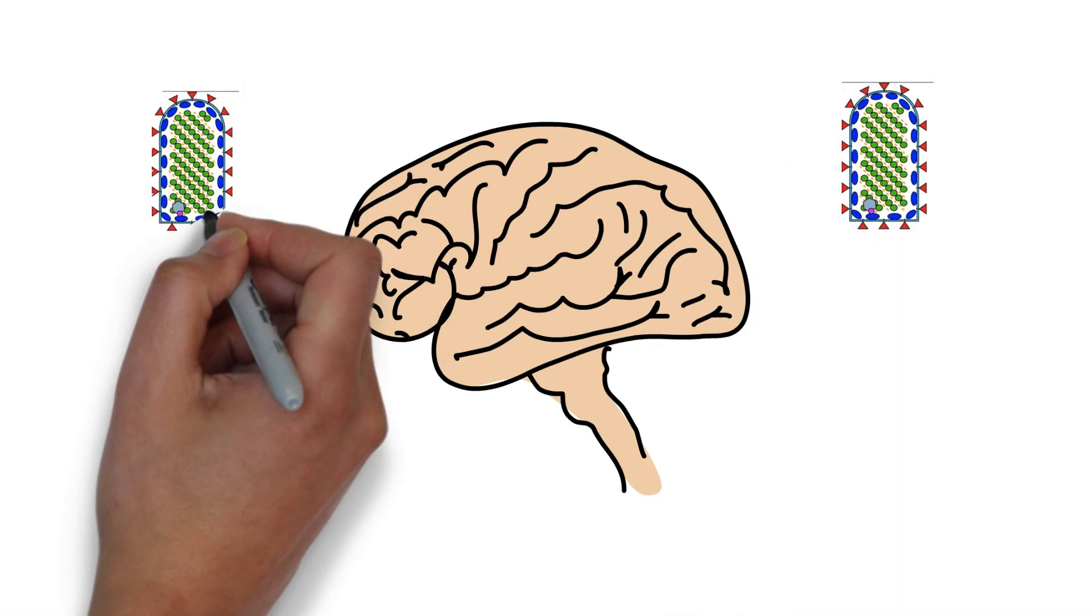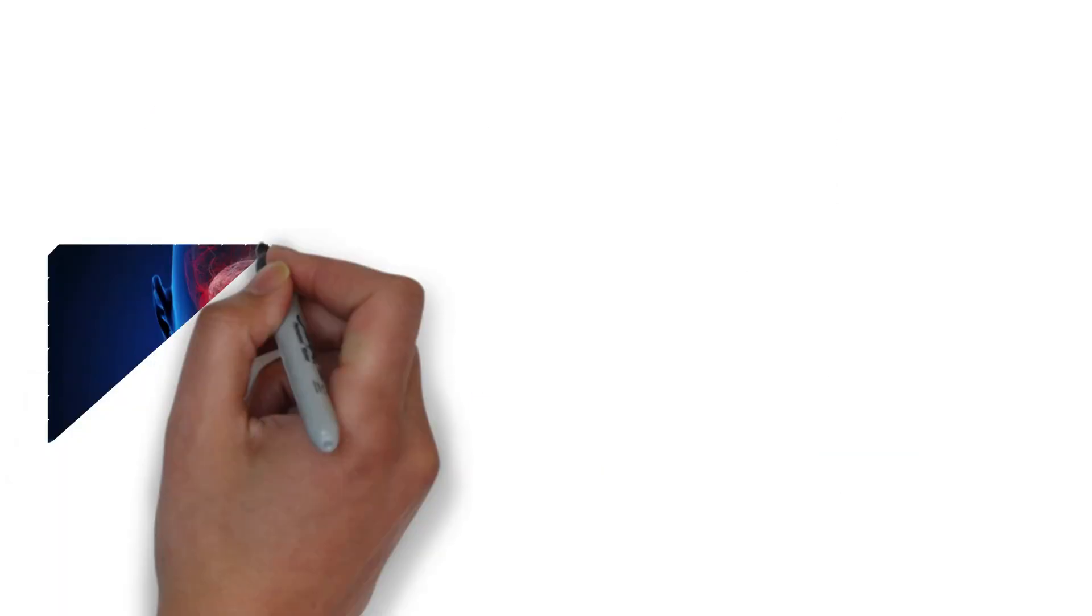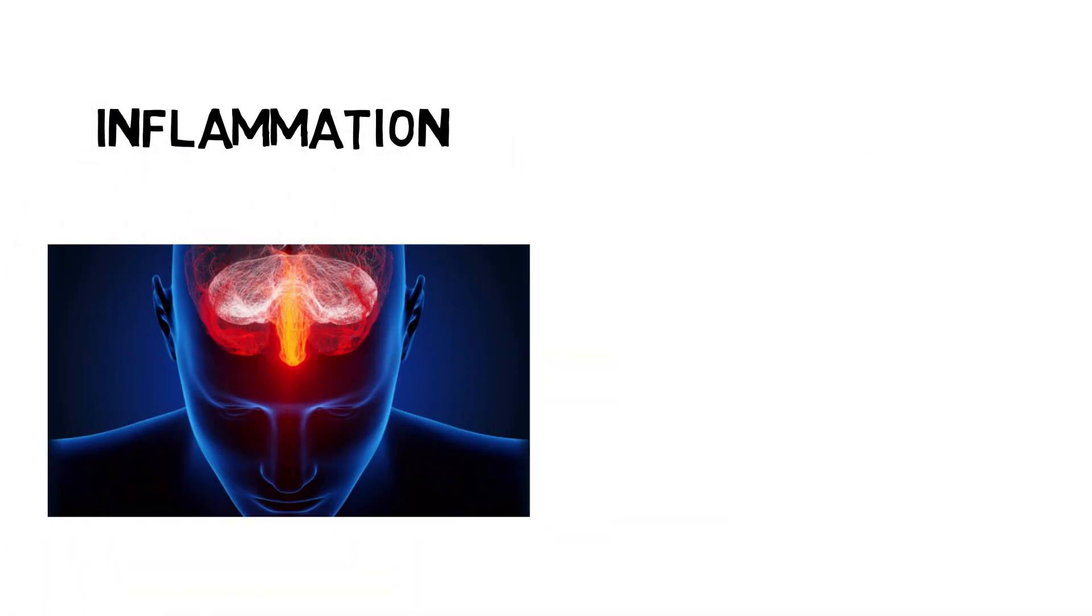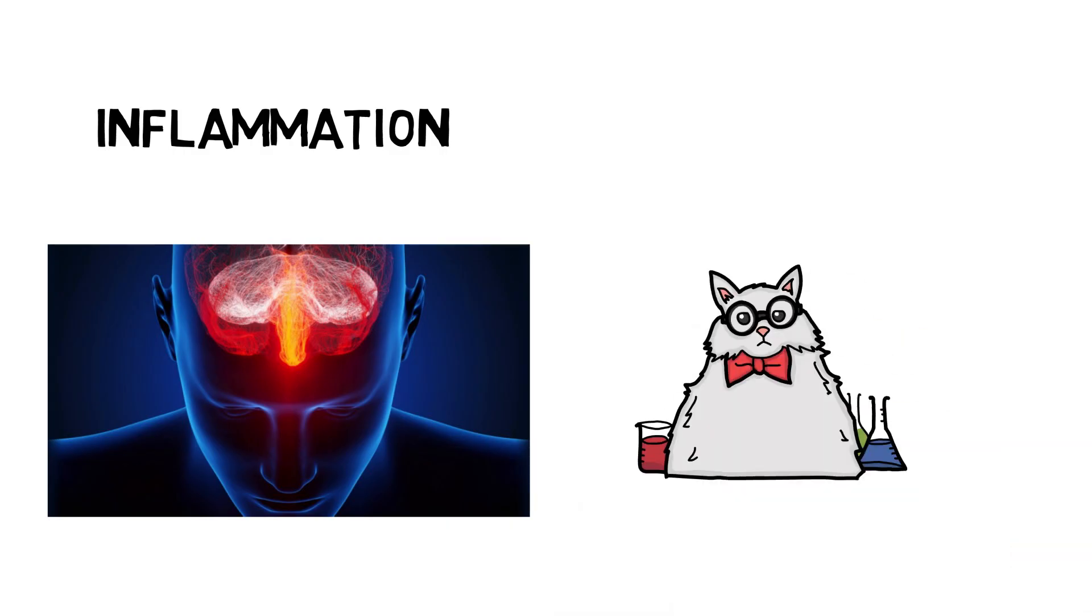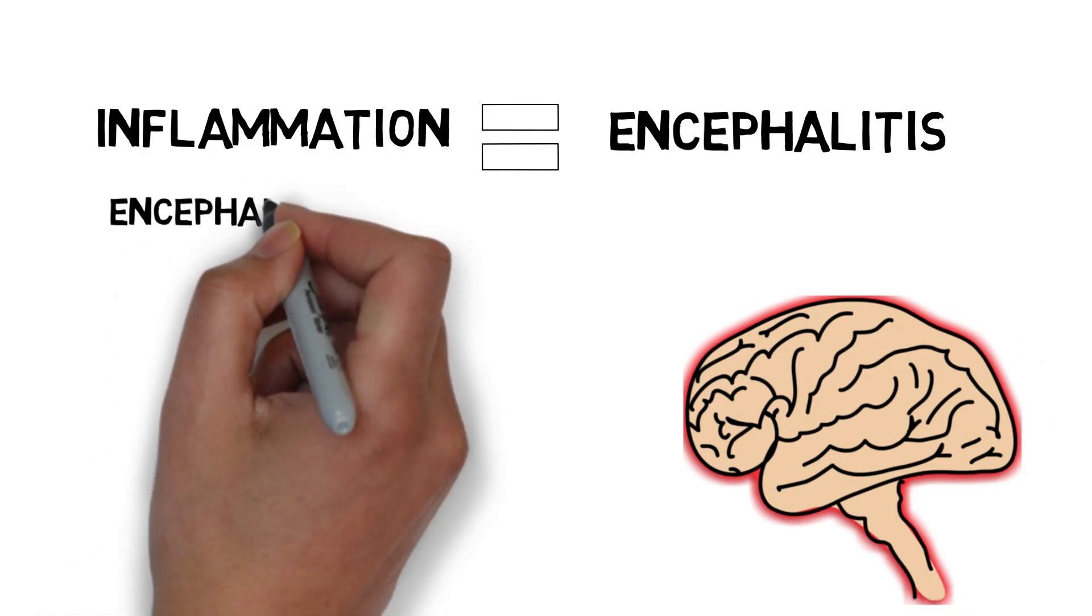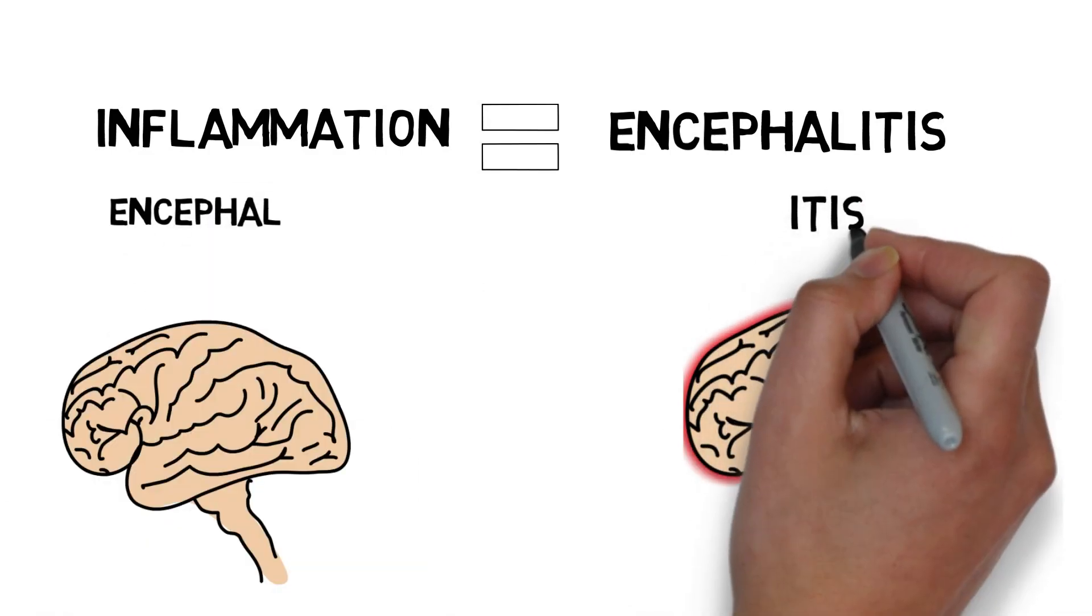The brain is where the virus exerts its detrimental neurobiological effects. The major effect of the rabies virus on the brain involves inflammation. To put that into science-y terms, it's called encephalitis. Encephalon means brain, and itis means inflammation.